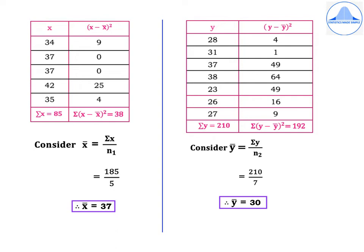Form another table with Y values: 28, 31, 37, 38, 23, 26, 27, giving summation Y = 210. Y-bar = summation Y / N2 = 210 / 7 = 30. Calculating (Y minus Y-bar)²: 28 − 30 = −2, (−2)² = 4. The remaining (Y minus Y-bar)² values are 49, 49, 64, 49, 16 and 9, giving summation (Y minus Y-bar)² = 192.